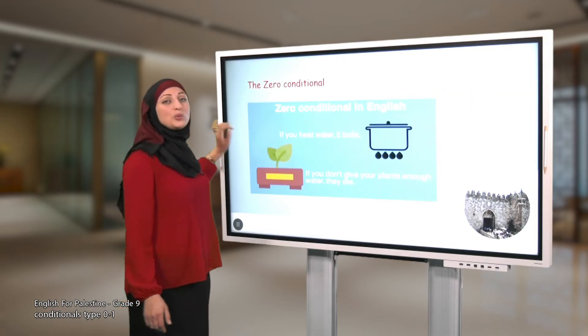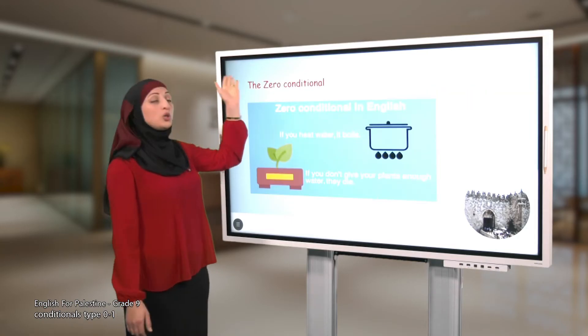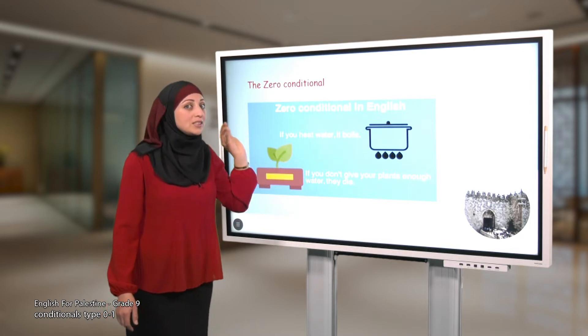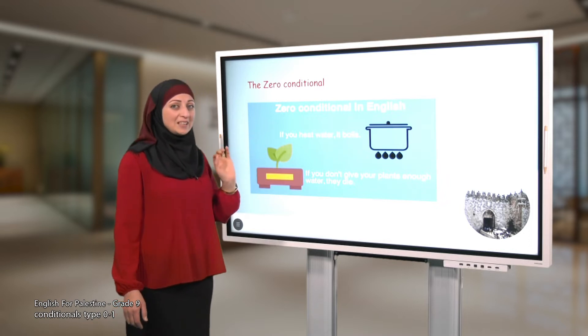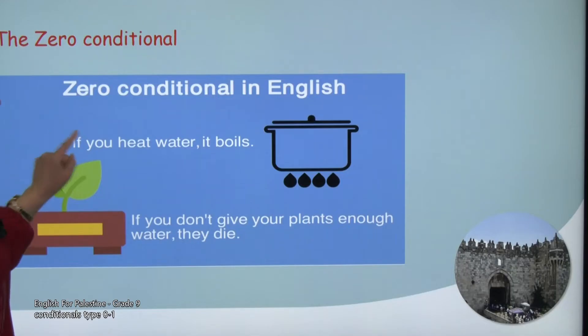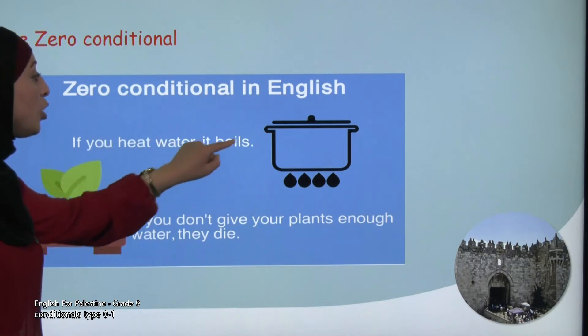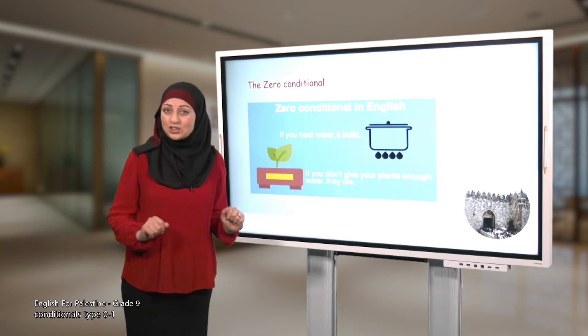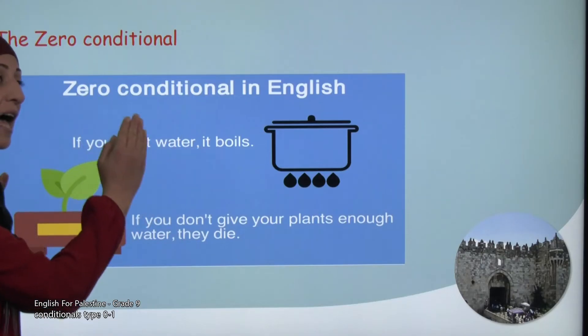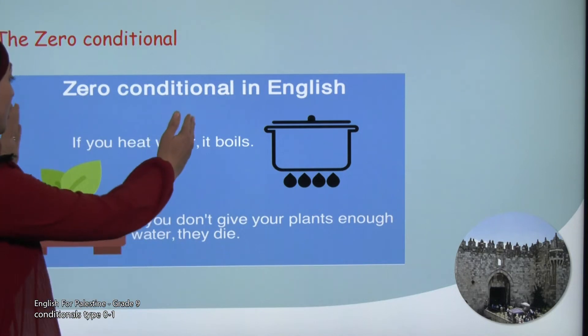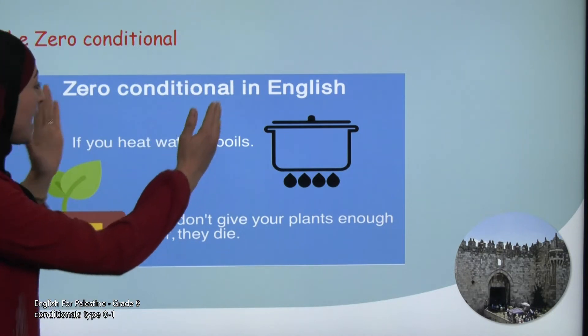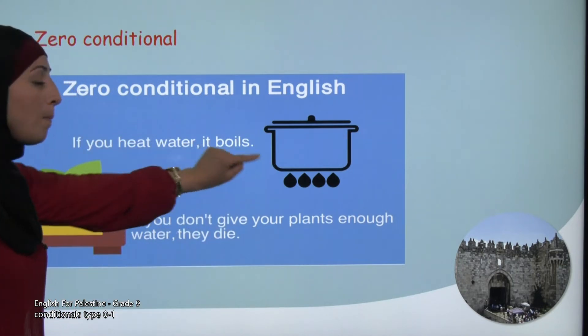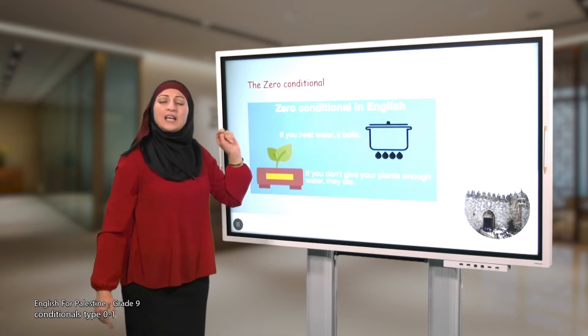Let's start with the first question. According to the zero conditional, I have an example here. You will concentrate with me to understand. Example number one: If you heat water, it boils. In this sentence I'm talking about a real situation. In this sentence also I have something called the if clause - if you heat water - and I have something called the main clause - it boils.